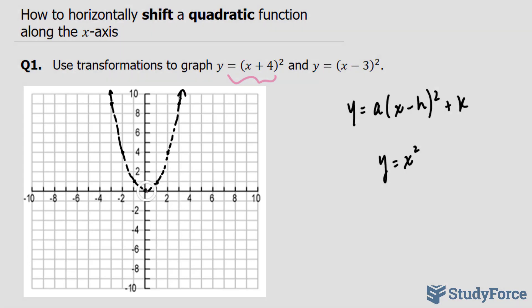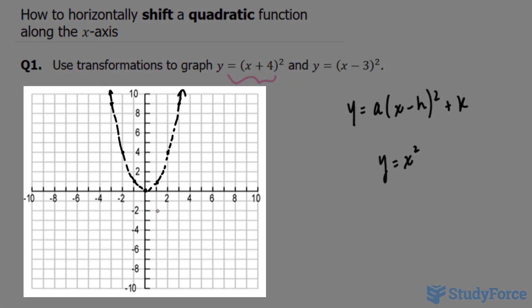For instance, this point right here is equal to (0, 0). It will be pushed to the left, so your new point will be (-4, 0), which will be right here.